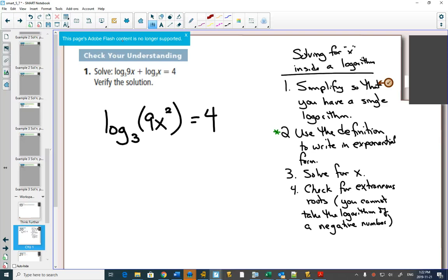you should get something that's a single logarithm equals a number. So, now you can do the step that I highlighted with the green because it's using a definition. This is what makes this step hard is because you're not actually doing something mathematically. You're just changing the form using the definition. In exponential form, the base is 3. The exponent is 4. The answer is 9x².